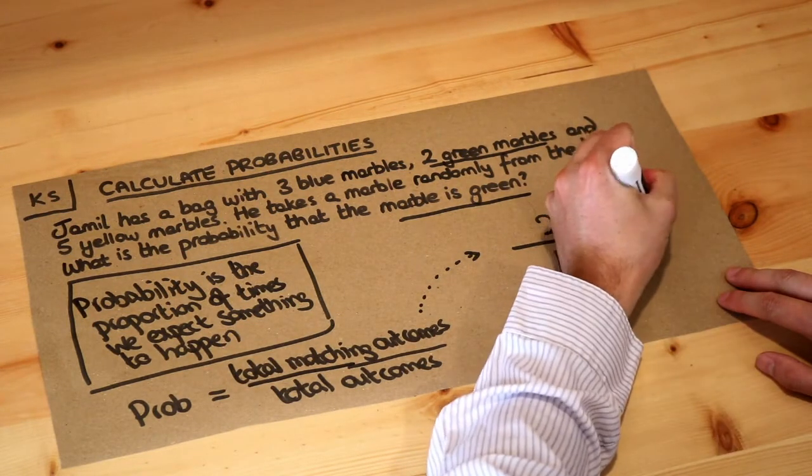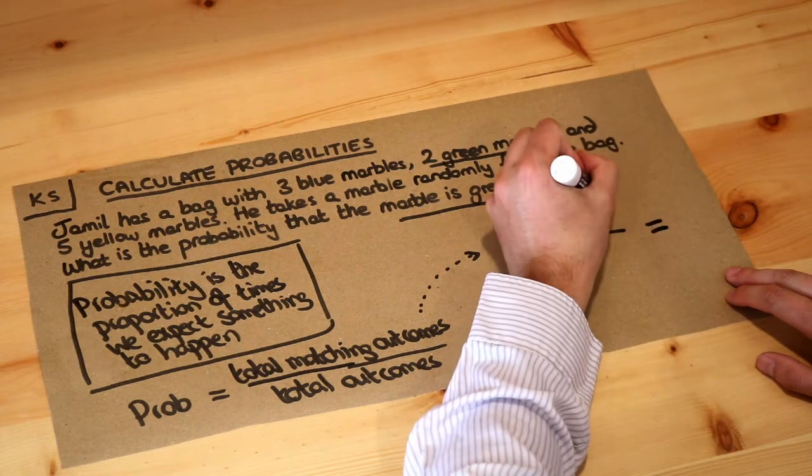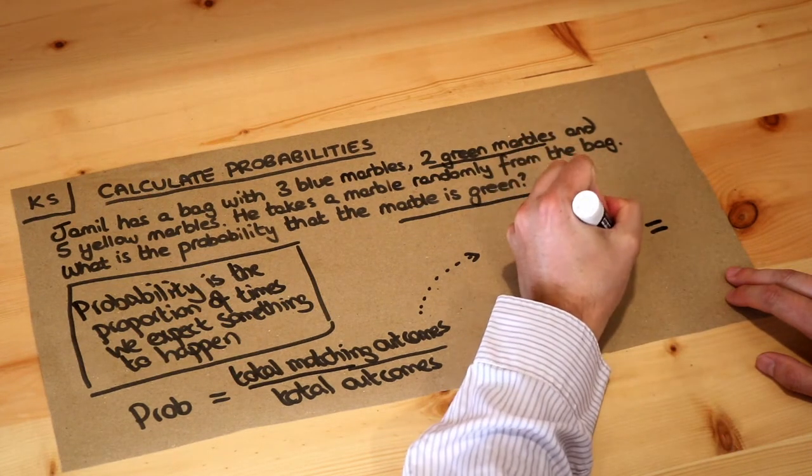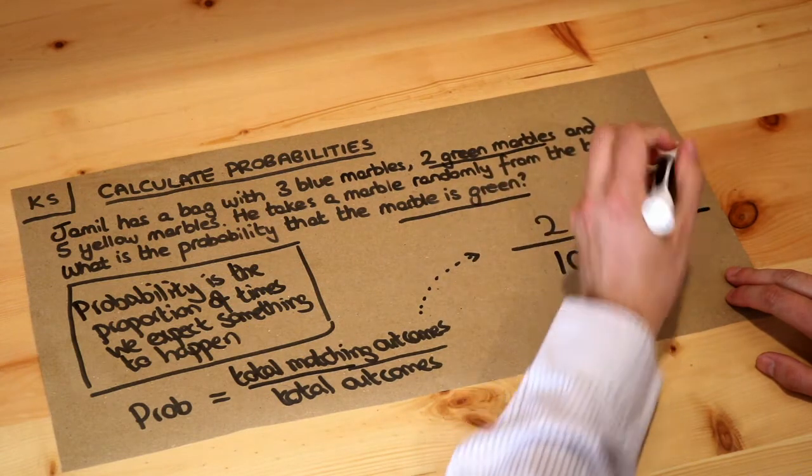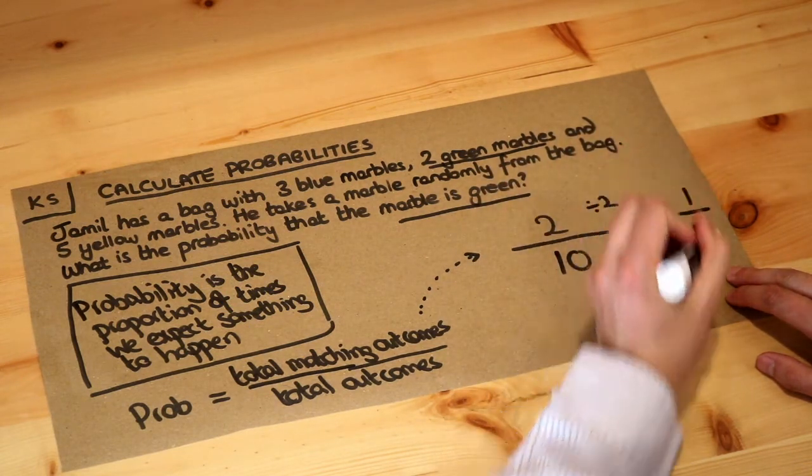Now we can simplify this fraction. We could divide the top and the bottom of this fraction by two. Remember, that's how we simplify fractions. So two divided by two gives us one, and ten divided by two equals five, so the probability is one-fifth.